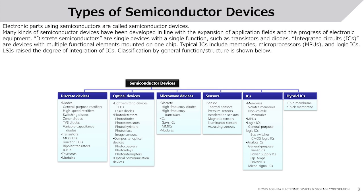Types of Semiconductor Devices. Electronic parts using semiconductors are called semiconductor devices. Many kinds have been developed in line with the expansion of application fields and progress of electronic equipment. Discrete semiconductors are single devices with a single function, such as transistors and diodes. Integrated circuits (ICs) are devices with multiple functional elements mounted on one chip. Typical ICs include memories, microprocessors (MPUs), and logic ICs. LSIs raise the degree of integration of ICs. Classification by general function and structure is shown below.